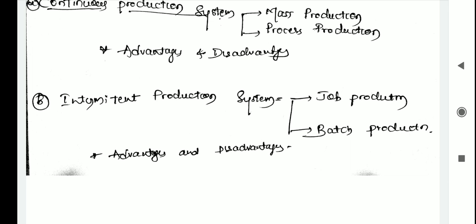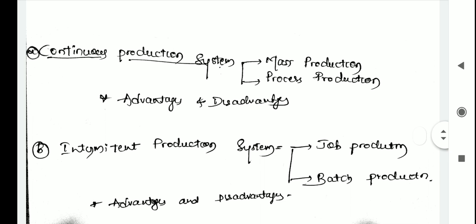In case of mass production, it's also called flow production. In this system, the production or manufacturing is carried on continuously in anticipation of demand, though the demand of the product may not be uniform throughout the year. For example: steel, fertilizers, soft drinks, etc. Standardization is a key note of mass production. The standardized raw material and machines are used to produce standardized products through a standardized process of production.